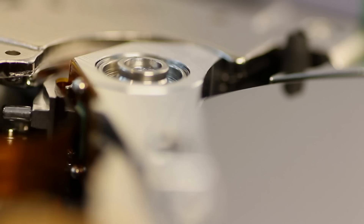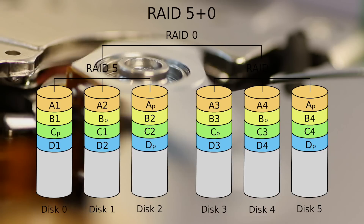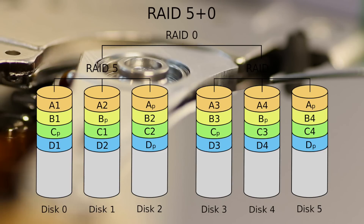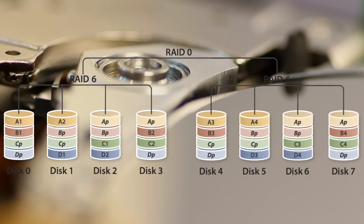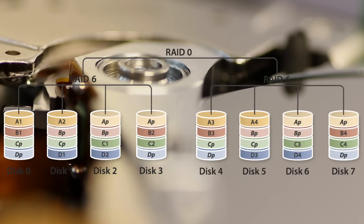There are more complex RAID systems like RAID 50, which is basically RAID 5 plus 0 — meaning there are multiple RAID 5 arrays linked together in RAID 0. Or RAID 60, which is RAID 6 plus 0, meaning multiple RAID 6 arrays together in RAID 0.